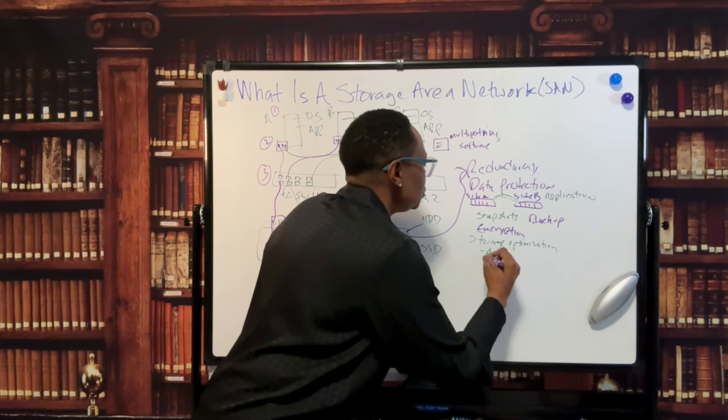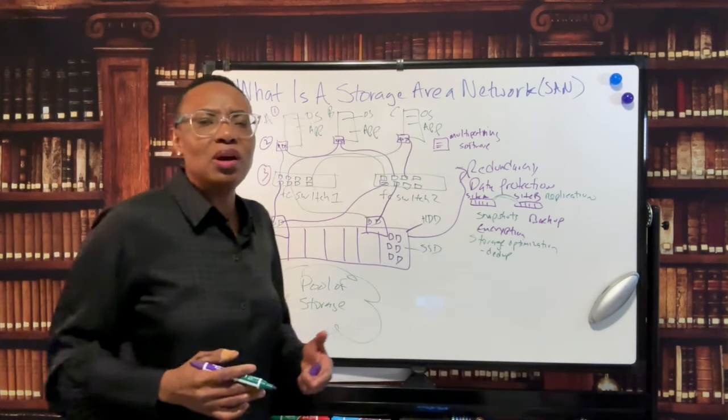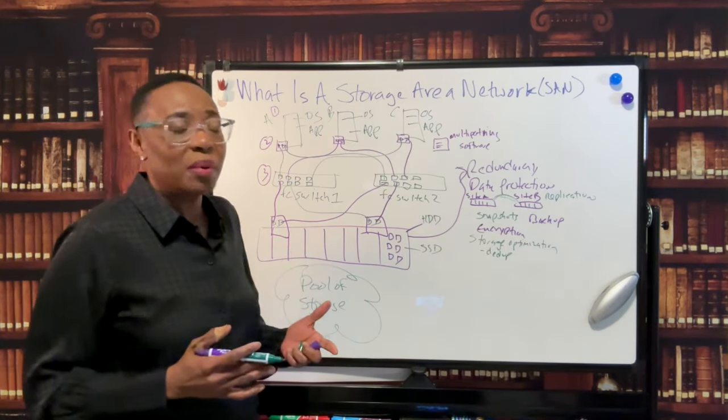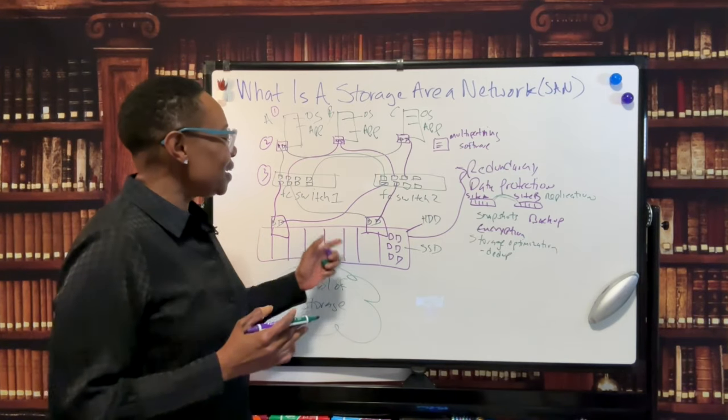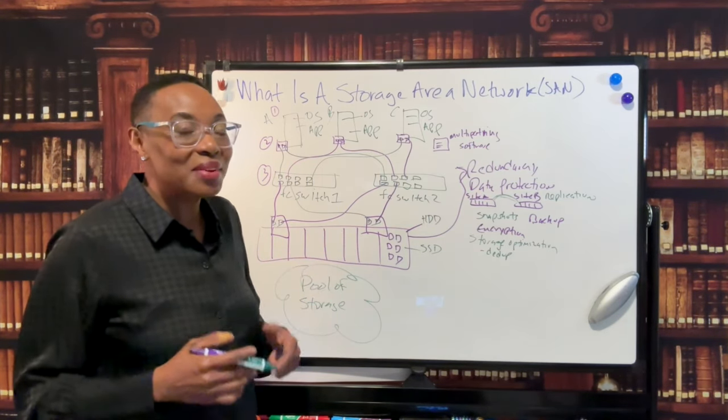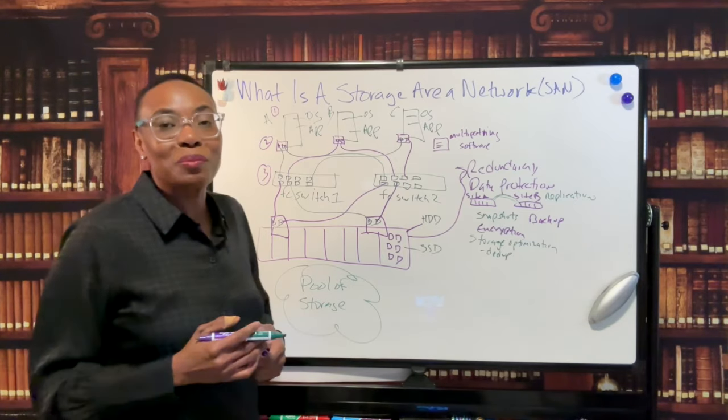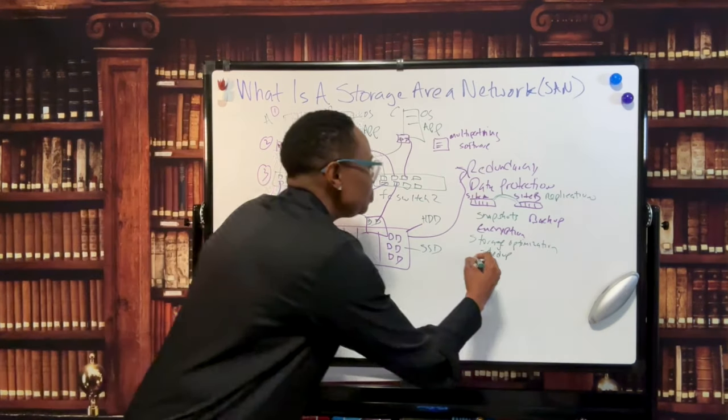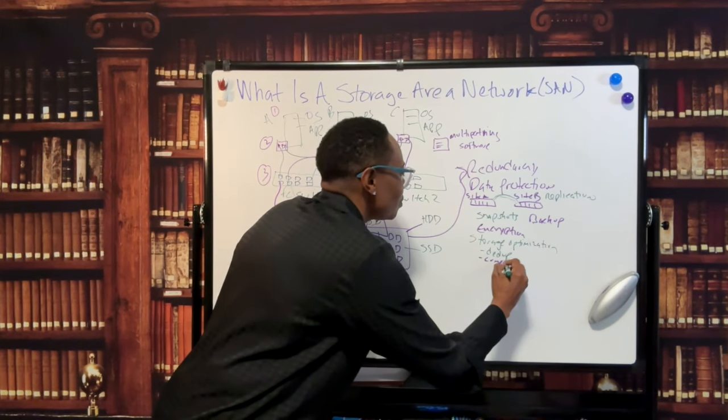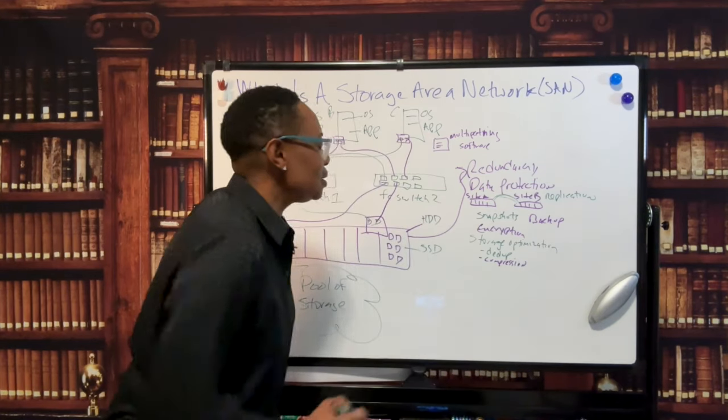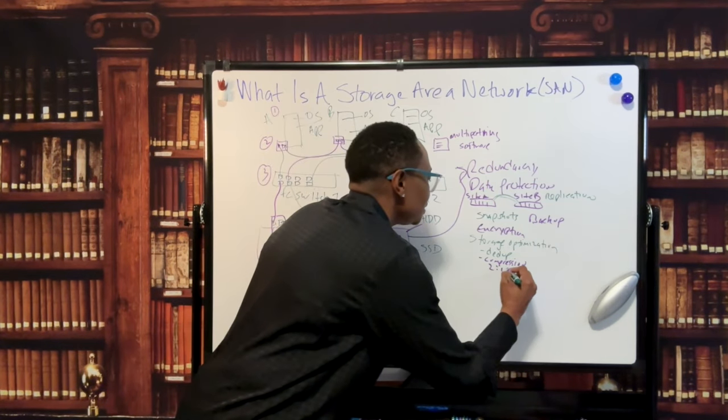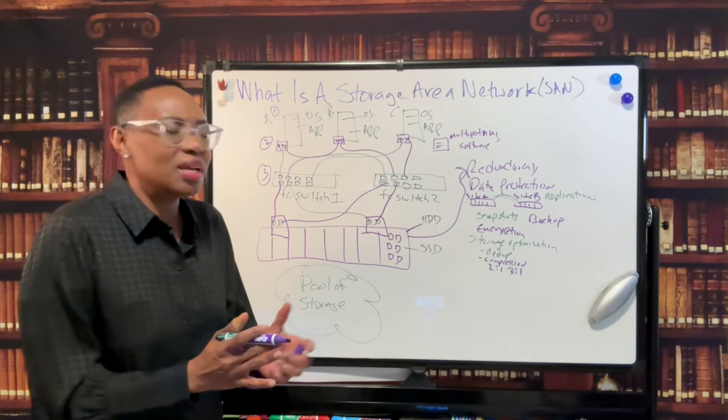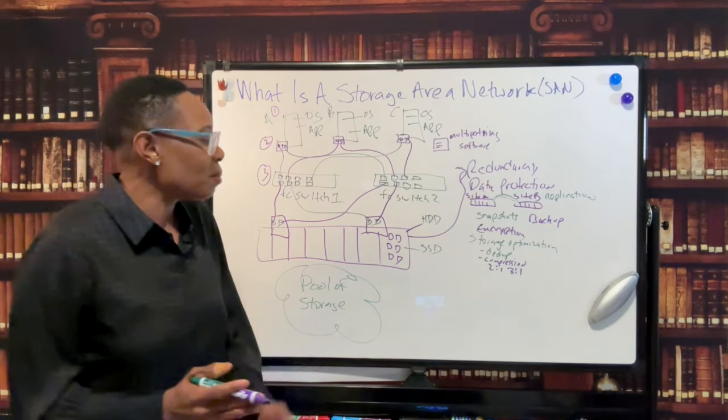We have deduplication or dedupe. And dedupe simply goes out there and gets rid of duplicate data to save on storage capacity, because disk in this disk array can be very expensive - again, it's not the disk that you go purchase from your local Best Buy. One disk can cost thousands of dollars. If you have compression, compression compresses the data, you know, generally two-to-one or three-to-one. So if you have 150 terabytes worth of data, you can compress that three-to-one and it's only taking up about 50 terabytes.